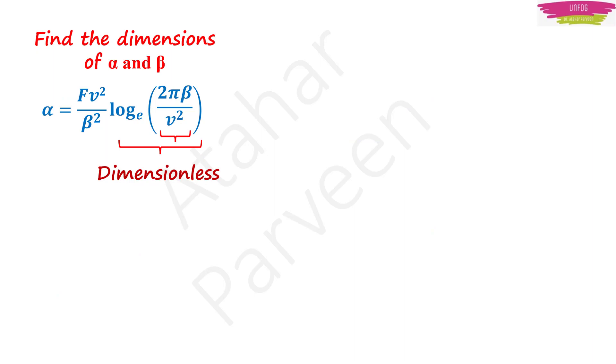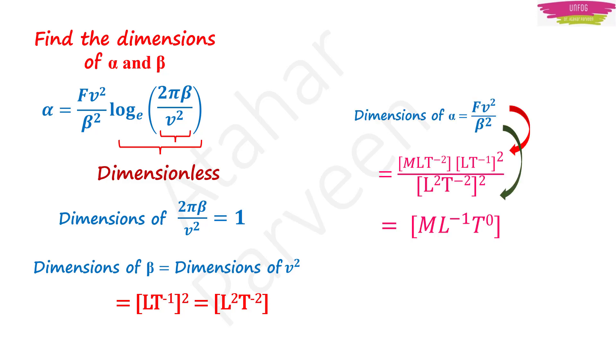For example, if you have some critical equation like this and you are told to find the dimensions of the parameters which are constants. Here, alpha and beta are constants. What you do? We know that log of this relation will be dimensionless. And so, dimensions of beta will be equal to dimensions of v square. Now you can easily find the dimension of alpha. So M L minus 1 T raised to 0 will become the dimensional formula for alpha. I have shown the example of a very critical equation.